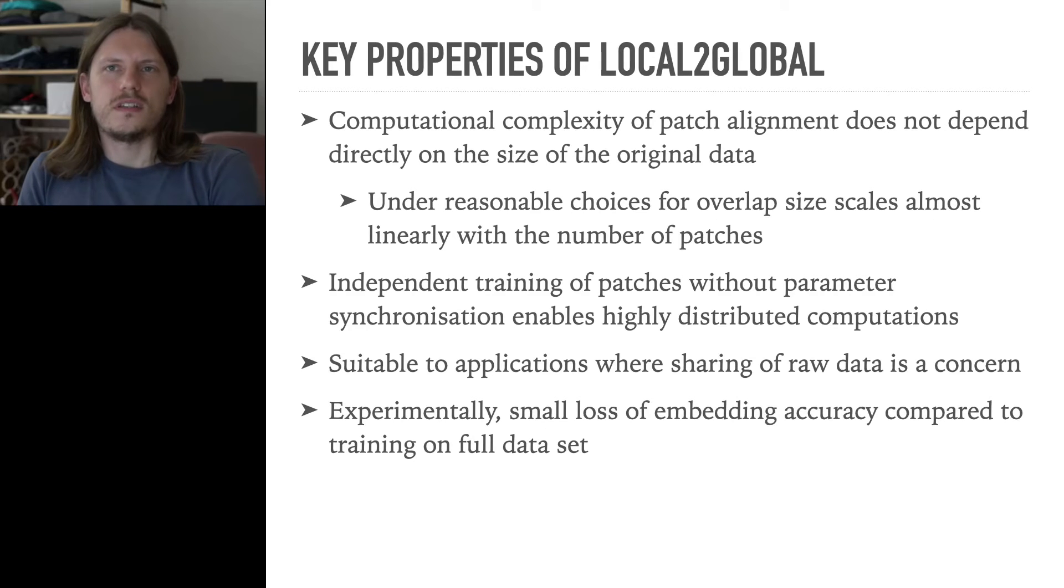The key properties of local-to-global are that the computational complexity of patch alignment does not depend directly on the size of the original network and scales almost linearly with the number of patches. Further, training patch embeddings independently enables highly distributed computations and means that local-to-global is suitable to applications where sharing of raw data is a concern.